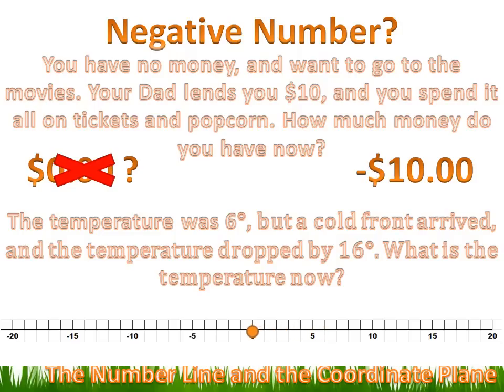First we need to move six numbers to get to zero. We've used six of the 16 degrees we're subtracting just to get back to zero. That means we've got 10 more degrees to go — we've used six of the 16, so there are 10 more to go. We have to go 10 more spaces to the left, and we end up on minus 10.